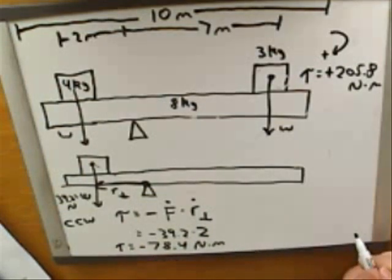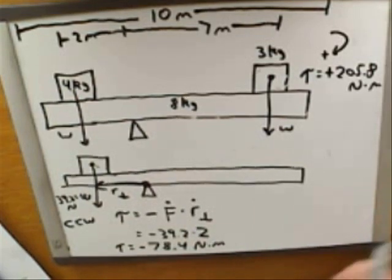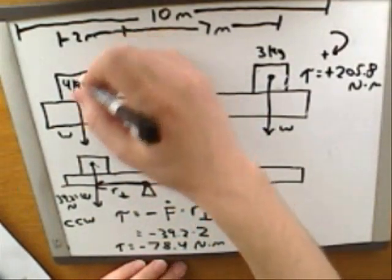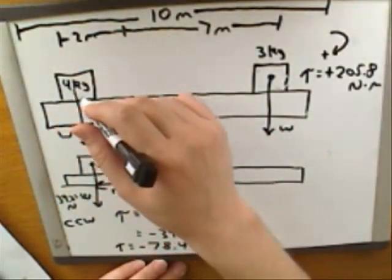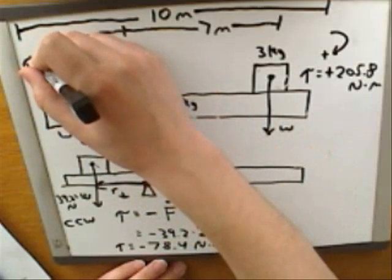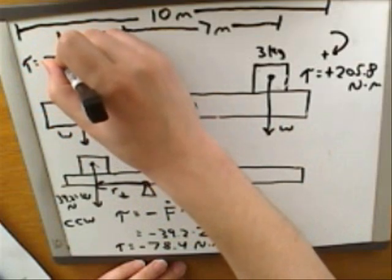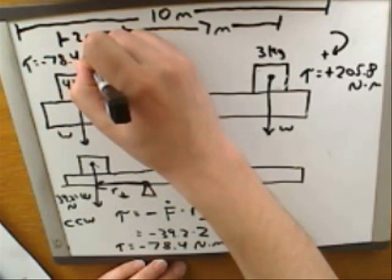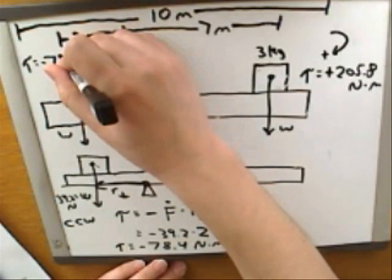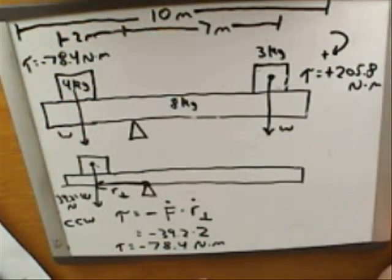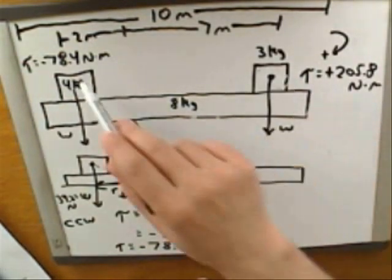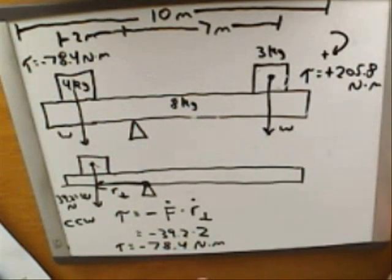Good, okay. So that gives us another torque that I can go back and put up in our picture. Now we know the torque from the left hand weight - the torque from that left hand weight was negative seventy eight point four newton meters. Now we have two separate torques: the torque from the right hand mass and the torque from the left hand mass.